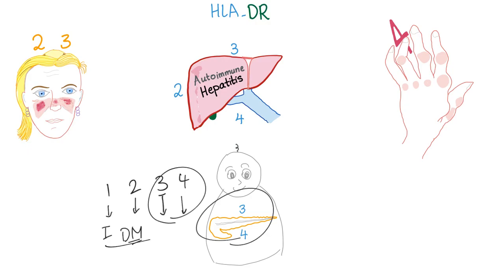For juvenile rheumatoid arthritis: adult RA is DR4, but juvenile RA in a young person is DR5 and DR8. You might think younger patients get smaller numbers, but that's not how it works here.